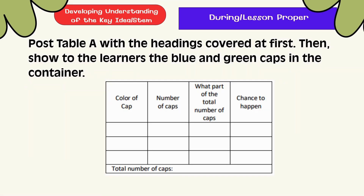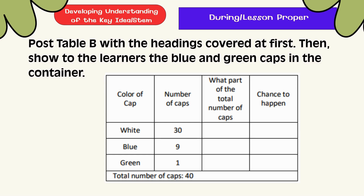Prepare Table A with the headings covered at first, then show the learners the blue and green cups in the container. Prepare Table B with the headings covered at first, then show to the learners the blue and green cups in the container.